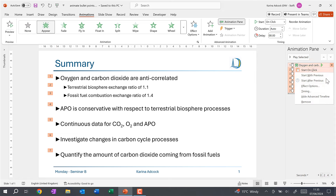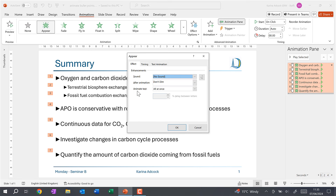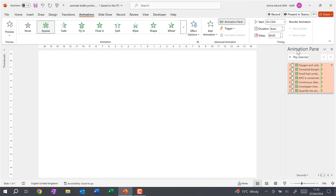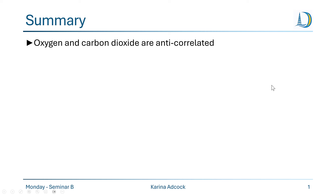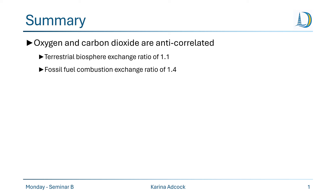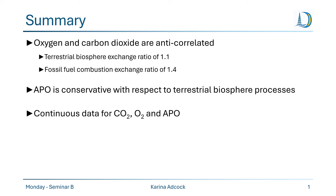We can also go to Effect Options and change Animate Text from All At Once to By Letter. For the seconds delay between letters, I'm going to change this to a much smaller number so the animation will play more quickly, then click OK. Now when we look at the presentation, each time I click, the bullet point will appear one letter at a time, looking like the text is being written across the screen.